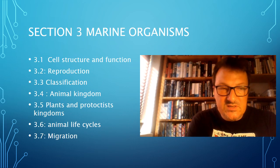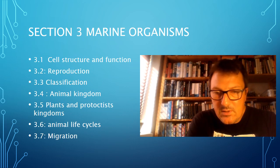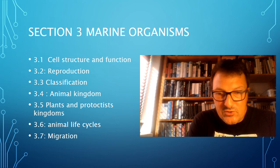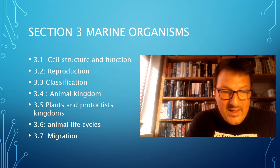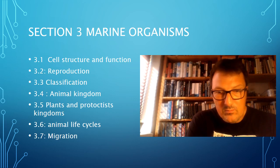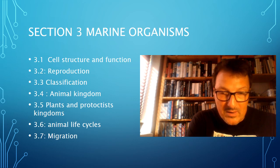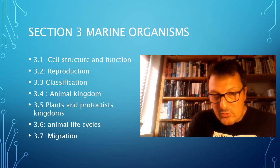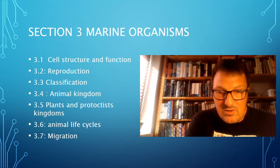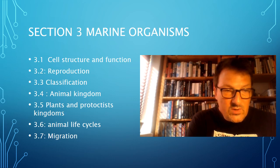Section 3 in the marine syllabus covers marine organisms, so here we move into pure biology. 3.1 is cell structure and function — classic biology. Describing the structure of plant cells and animal cells, their similarities and differences. We're also going to look at prokaryote and eubacteria cells, learning how to identify cell structures and look at pictures of them.